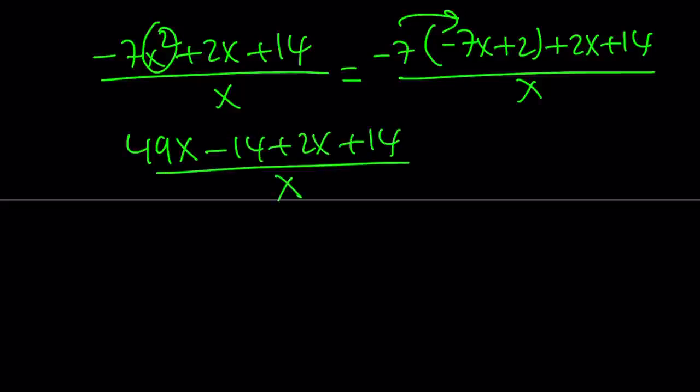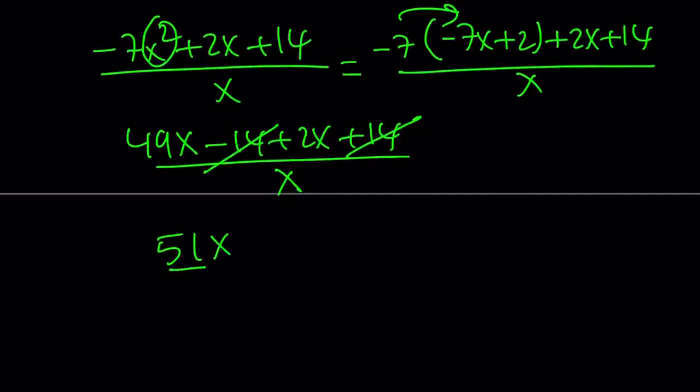Last time we had the radicals cancel out. This time, numbers are going to cancel out. From here we get 51x divided by x. And finally, x's cancel out, and the answer is going to be 51.